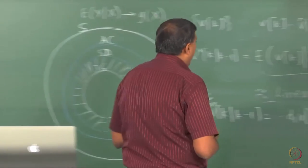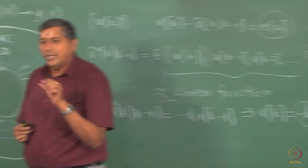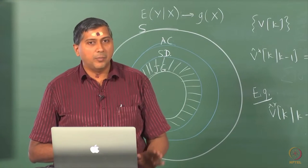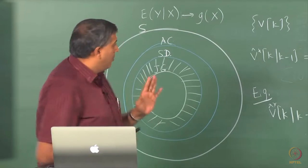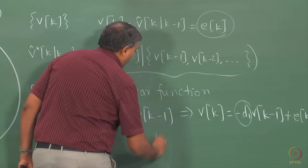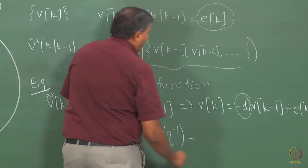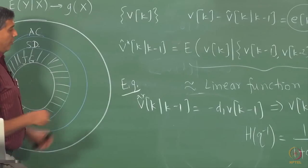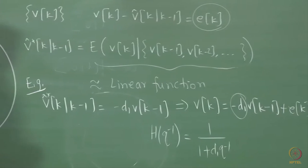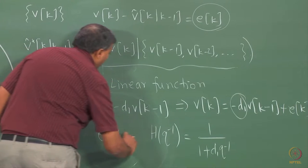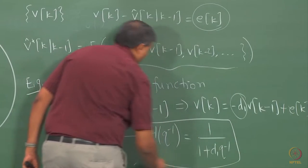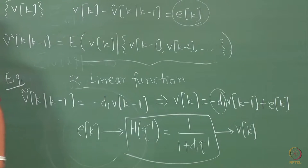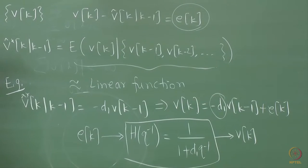Now, this is where we would like to slightly digress and briefly review the concept of linear systems theory for the deterministic world, so that you understand the parallels. Before we do that, we have already done one step — another step here where we introduce a transfer function operator for this process. It happens to be 1 over (1 plus d1 q-inverse), and essentially now I can think of v_k being driven by this h, which is a first-order autoregressive process.